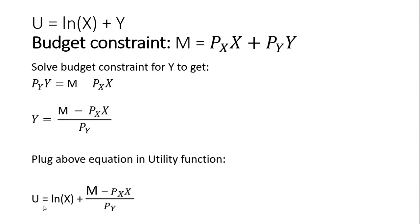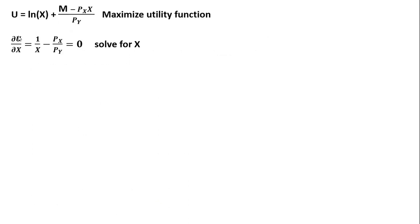Now we have utility as a function of one variable, x, which will make maximizing somewhat easy. We're just going to take the partial derivative of the utility function with respect to x, set that equal to 0, and then solve for x. So rewriting our utility function and taking the partial derivative with respect to x and setting that result equal to 0.